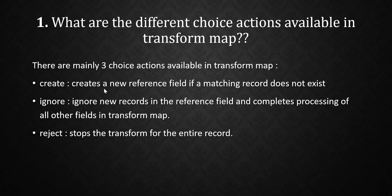Create means it creates a new reference field if a matching record does not exist. Ignore means it ignores new records in the reference field and completes processing of all other fields in the transform map. Reject means it stops the transfer for the entire record.